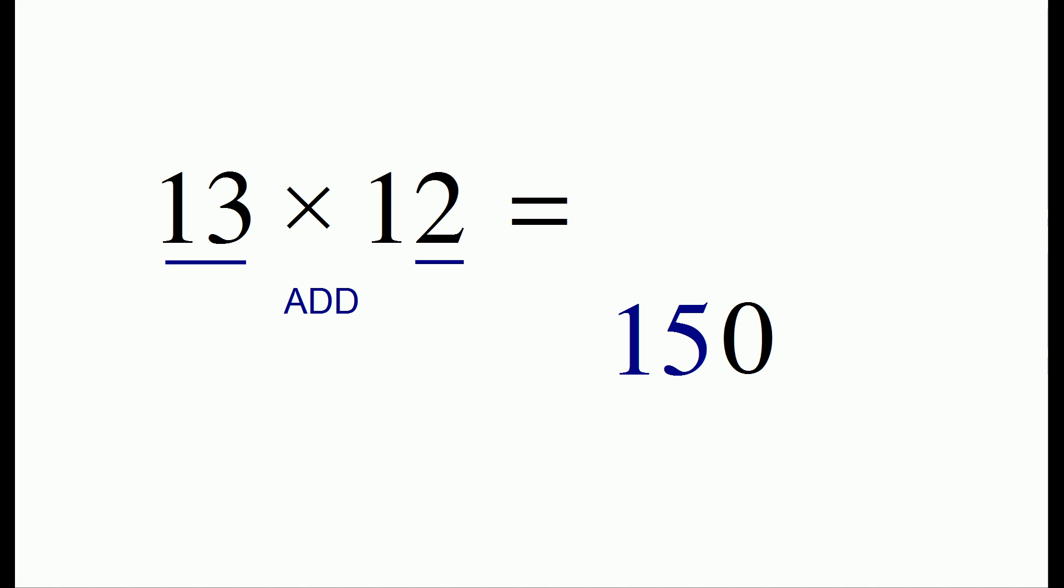The second step in the process is to take the digits 3 and 2 and multiply them together. The result is 6.